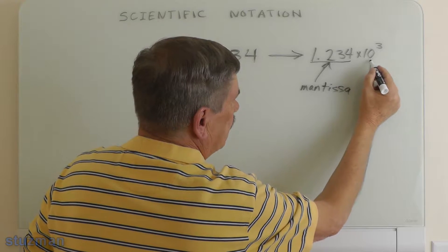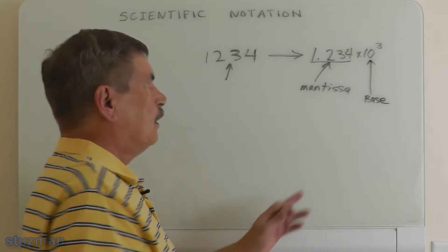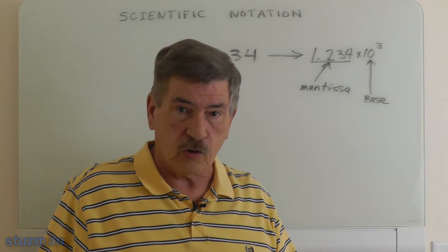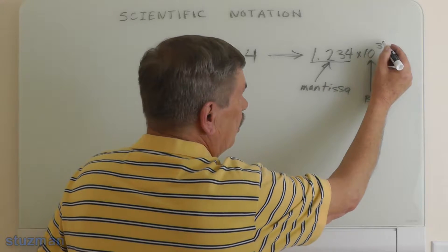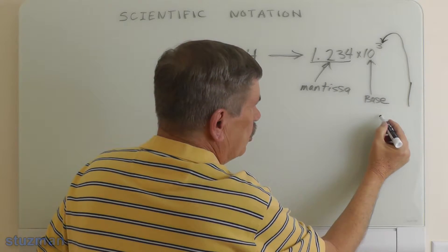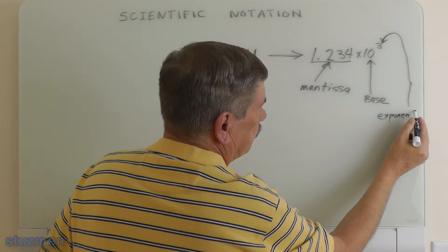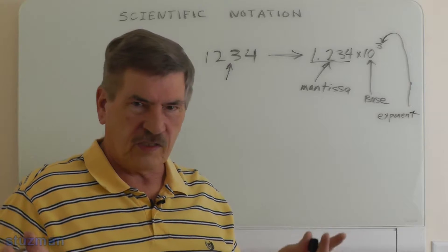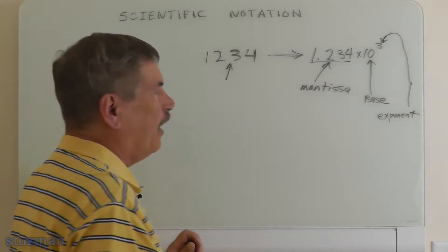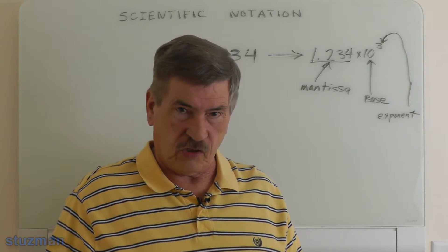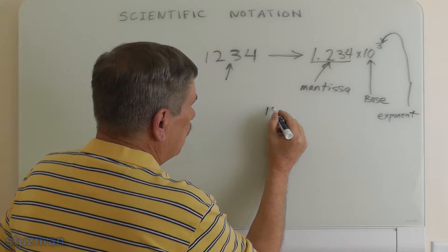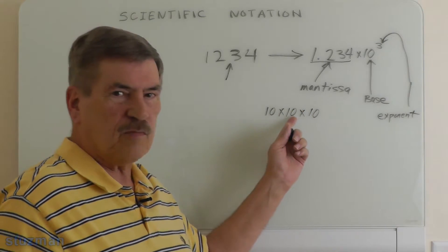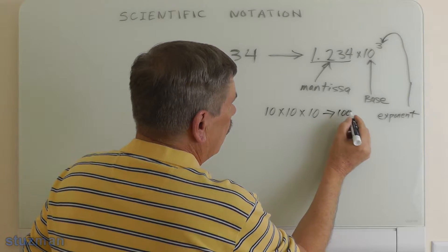This number — the 10 — is known as the base. In scientific notation, this number 10 will always be 10, and in engineering notation it will also be 10. Now that leaves this number right up here — the 3 — which is known as the exponent. Let's look at the exponent. 10 to the 3 means that 10 is multiplied times itself 3 times: 10 times 10 times 10, which is three times for the exponent. So that's going to be equal to 1,000. If I had 10 to the second power, or 10 squared, that'll be 100 — 10 times 10.